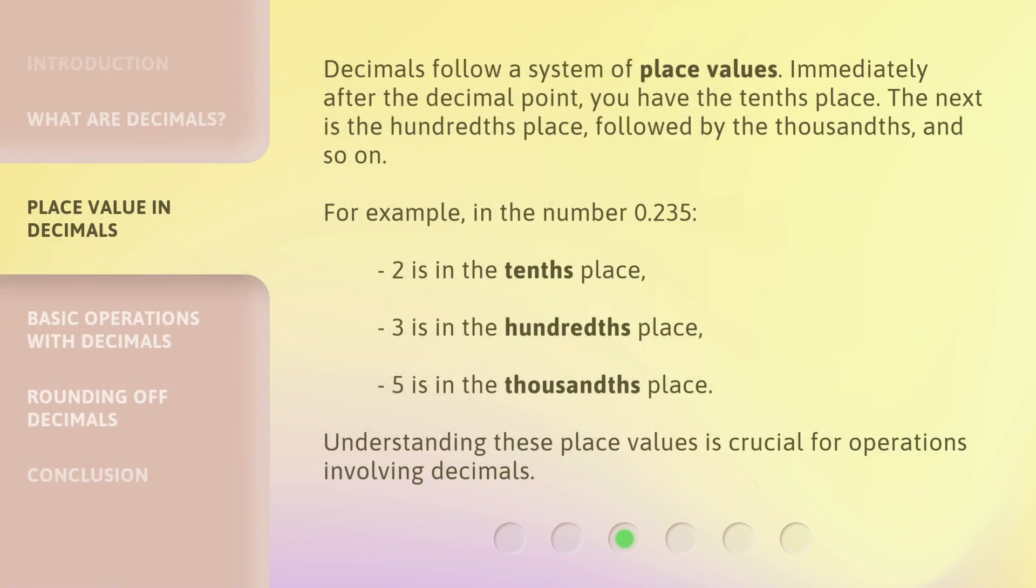Decimals follow a system of place values. Immediately after the decimal point, you have the tenths place. The next is the hundredths place, followed by the thousandths, and so on.